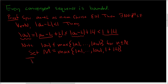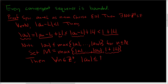Here's the punchline. For all positive integers n, the absolute value of a sub n is less than or equal to M. If little n is less than or equal to capital N, then a sub n is always at most the maximum of those finitely many terms. If little n is bigger than capital N, then it is less than 1 plus the absolute value of L. So in both cases, this is less than or equal to M. M is our upper bound, and we are done.